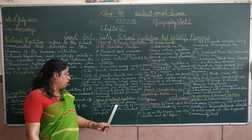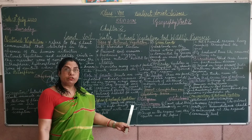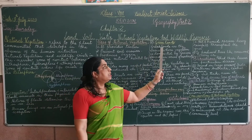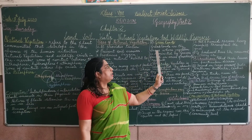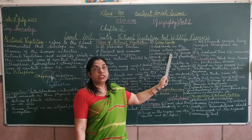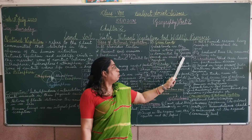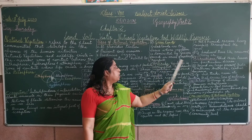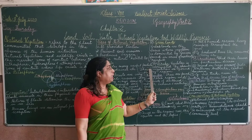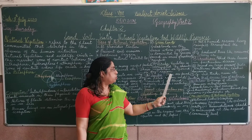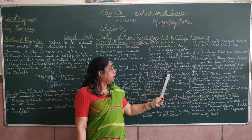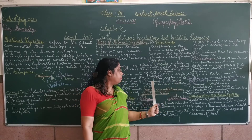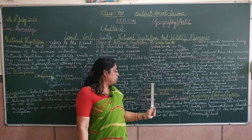Forests are areas with a high density of trees, found in areas with abundant rainfall. Grasslands are areas where vegetation is dominated by grass, found in areas of moderate rainfall. Scrubs are dominated by shrubs and are found in dry regions. Tundra is found in polar regions and consists of scattered mosses and waterlogged soil.